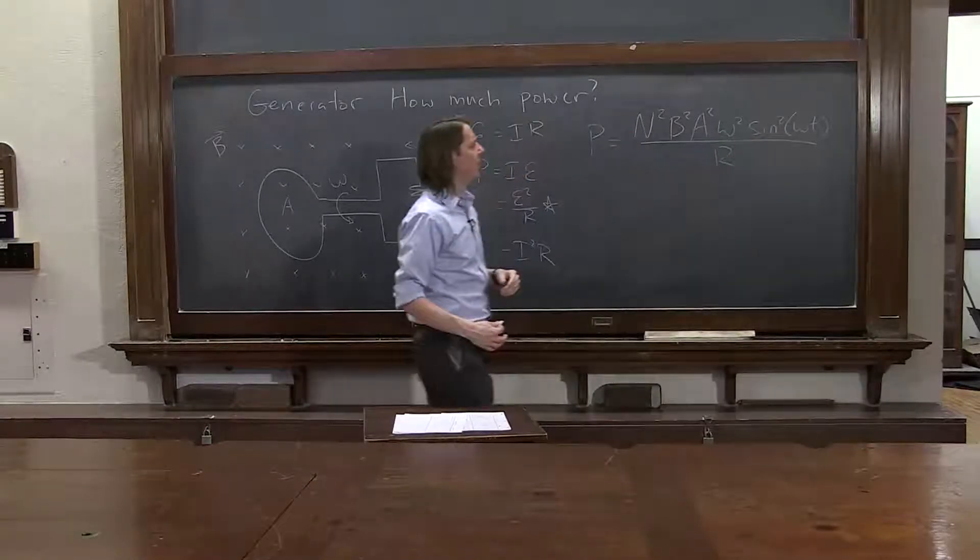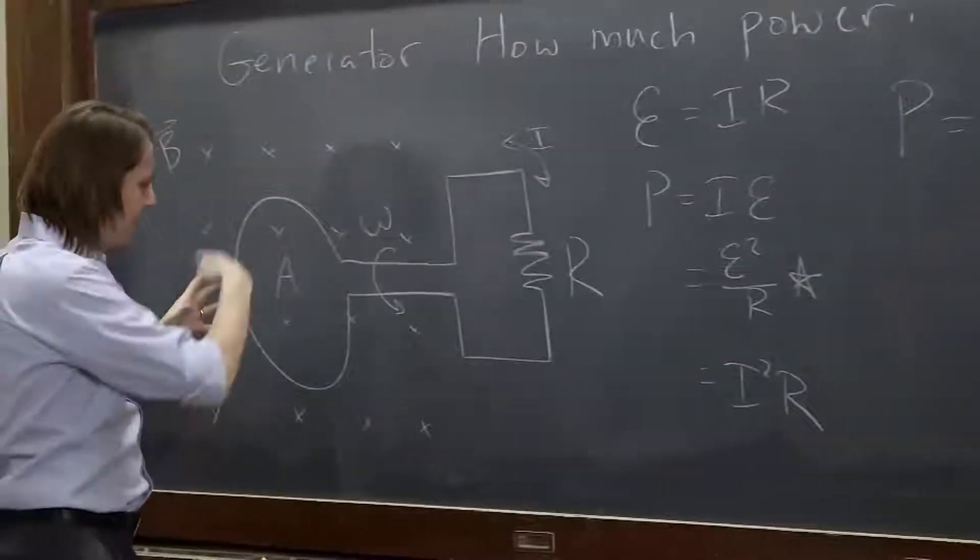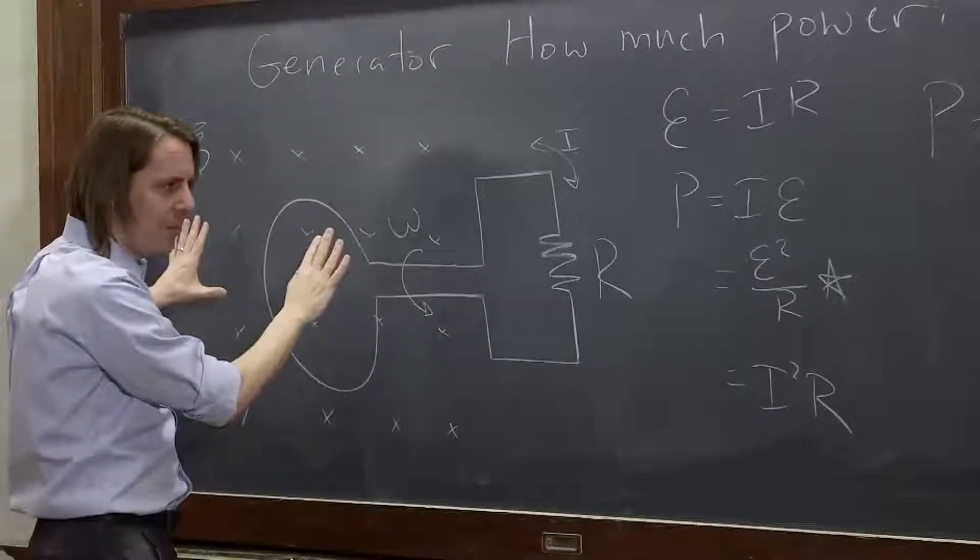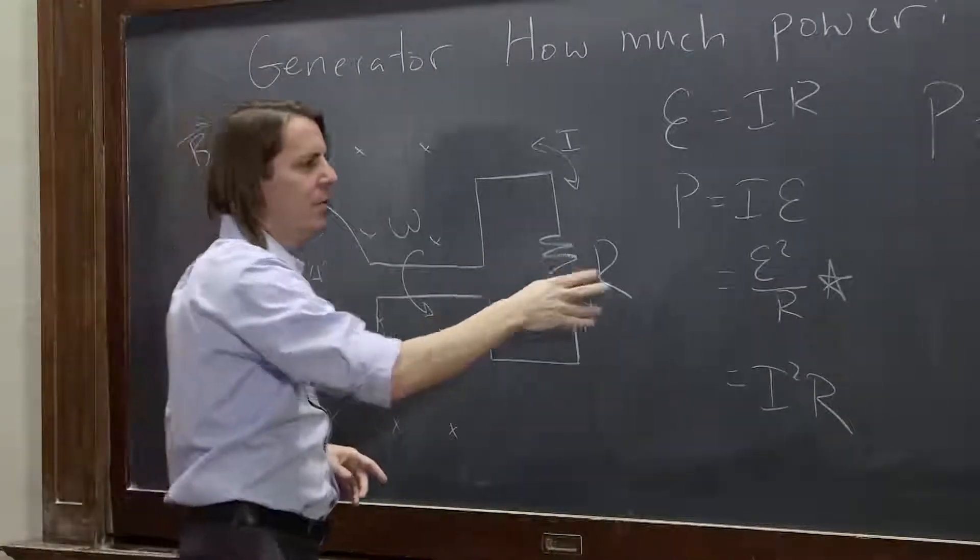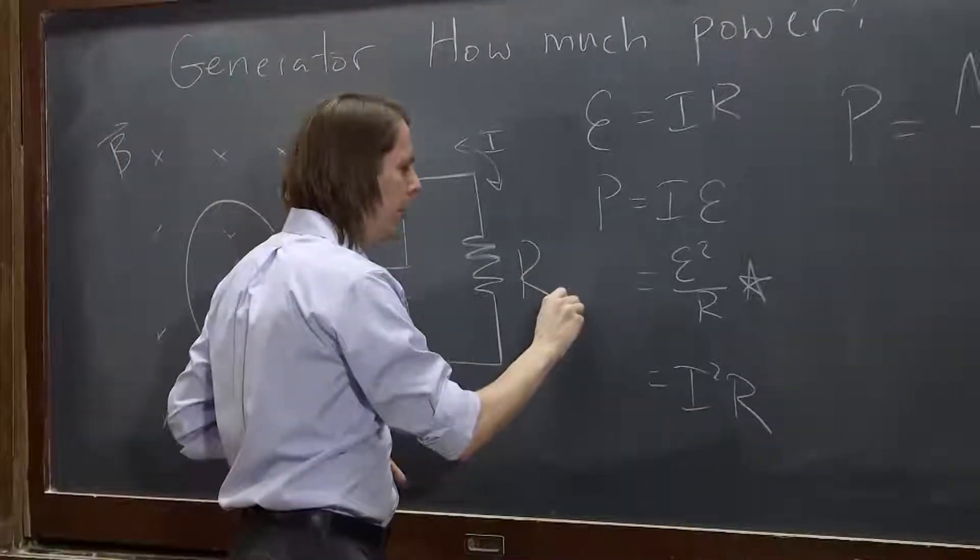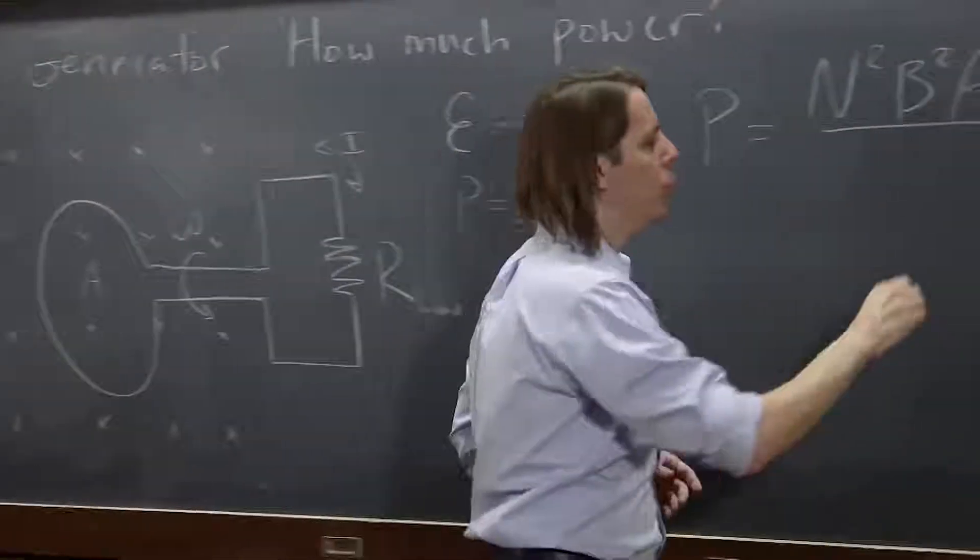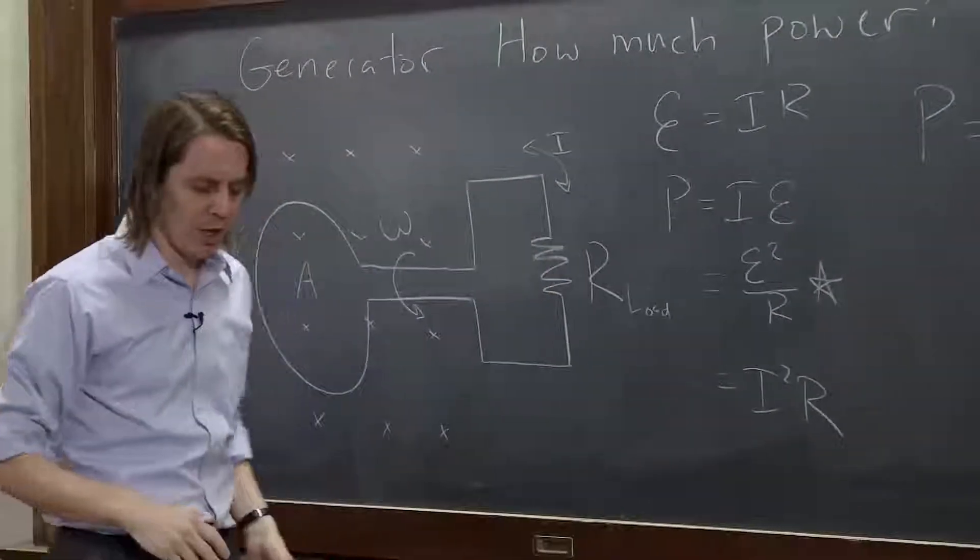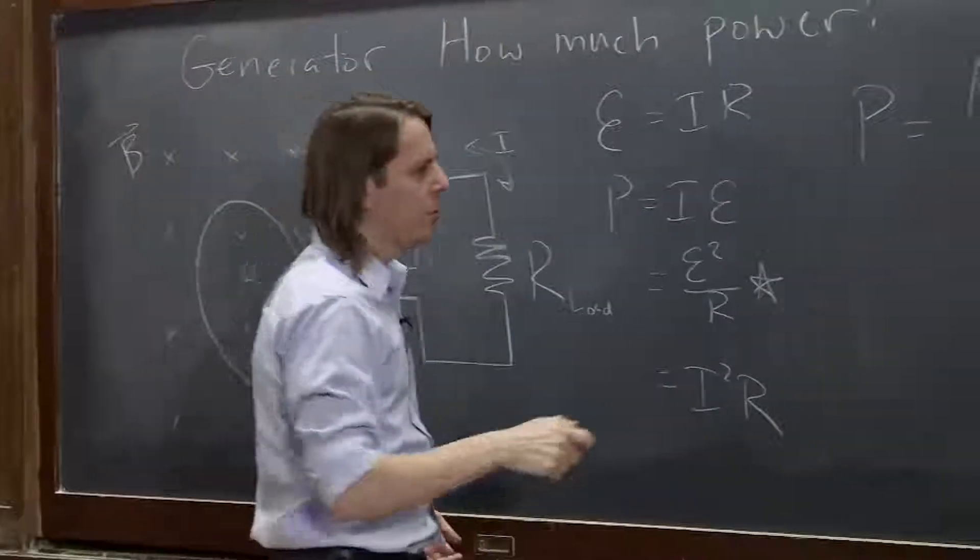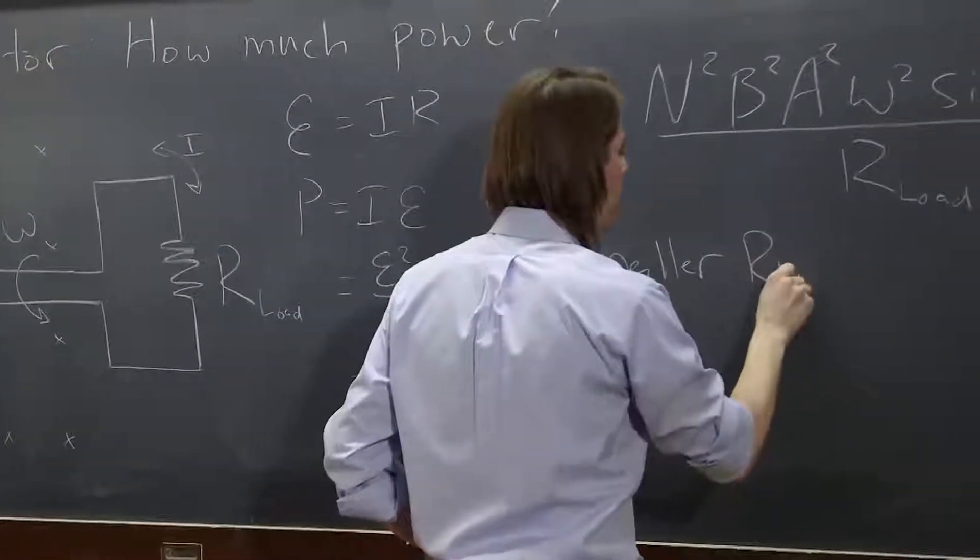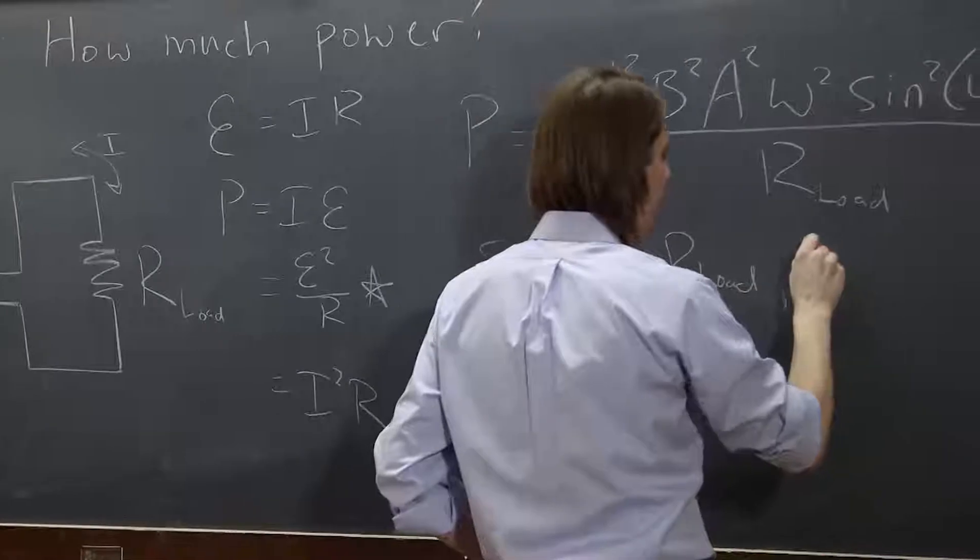But look here at the R. So if we just have this thing rotating, this is all steady, or it's steadily rotating at omega. This is all the same. And you go and you start changing R, it looks like you're going to change the power. So often it's called the load, R load. It's just whatever system this generator is working on. So you'll see load a lot in electronics. So if we have smaller R load, we have more power.